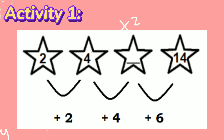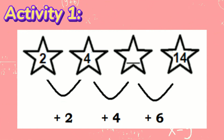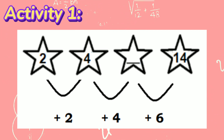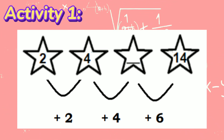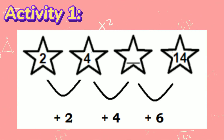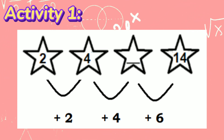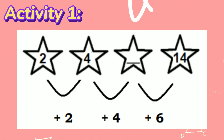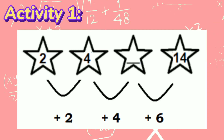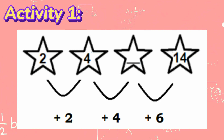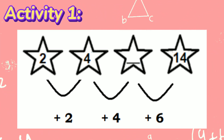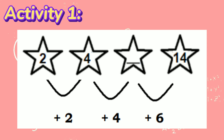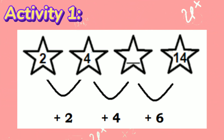For Step 1, we should look for the pattern. Since the given terms are inside different shapes, let us first look closely at the numbers inside the stars. The numbers inside the stars are in increasing order, so the mathematical operation would be either addition or multiplication. The terms are added by even numbers — 2, 4, and 6 — consecutively.